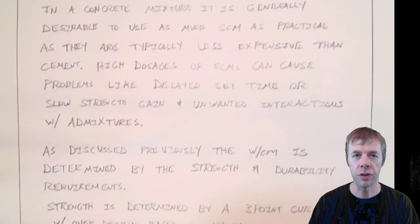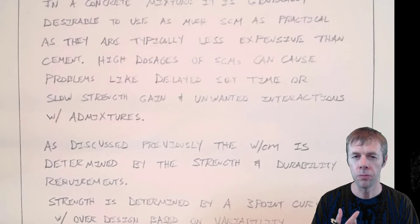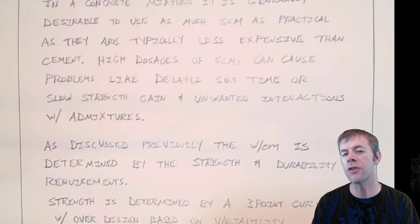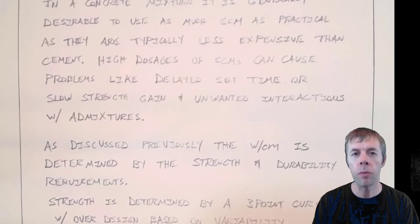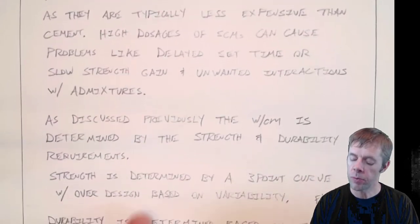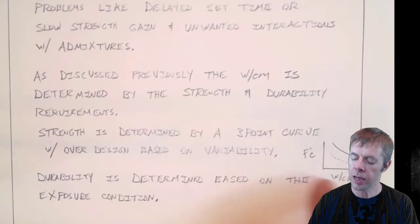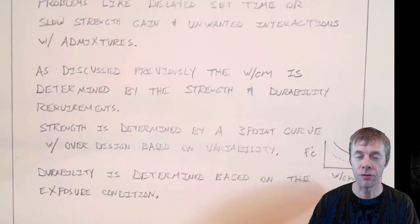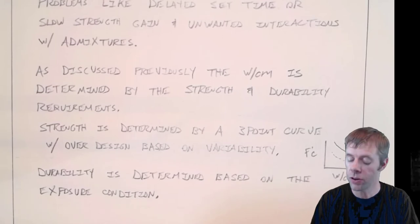So as discussed previously the water cement ratio is determined by the strength and the durability requirements. If you don't remember strength is determined by a three-point curve. That's where you make mixtures with different water cement ratios and you plot a curve and you just pick off what kind of strength you need.